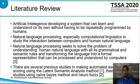Natural language processing seeks to solve the problem of understanding human natural language with its grammatical and semantic rules, transforming the language into a formal representation that can be processed and understood by computers. There are several previous studies in making automatic essay scoring using data and semantic methods, other studies using neural network methods, and our series presents automatic essay scoring using natural language processing and text mining methods.